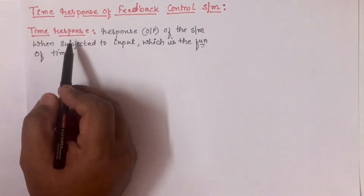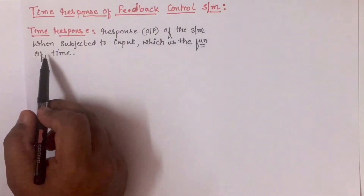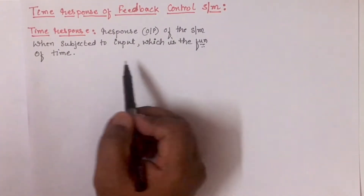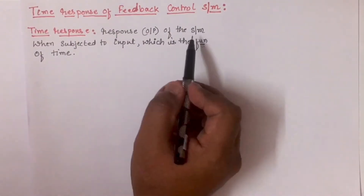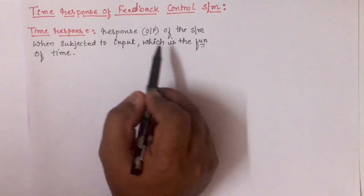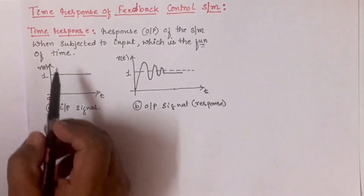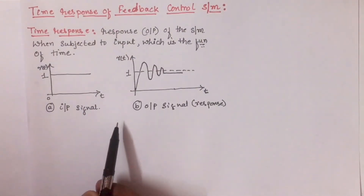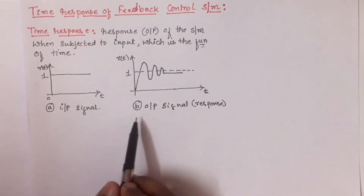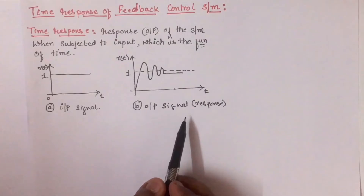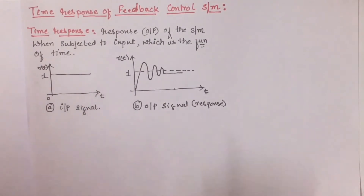Now let us define time response. It is the response or the output of the system when subjected to an input which is a function of time. So we can say when the input is applied to the system, the response of the system with respect to time is nothing but time response. To understand the time response, let us consider the example as shown in this figure. Here input is shown in figure A and figure B shows the output or the response of the system.